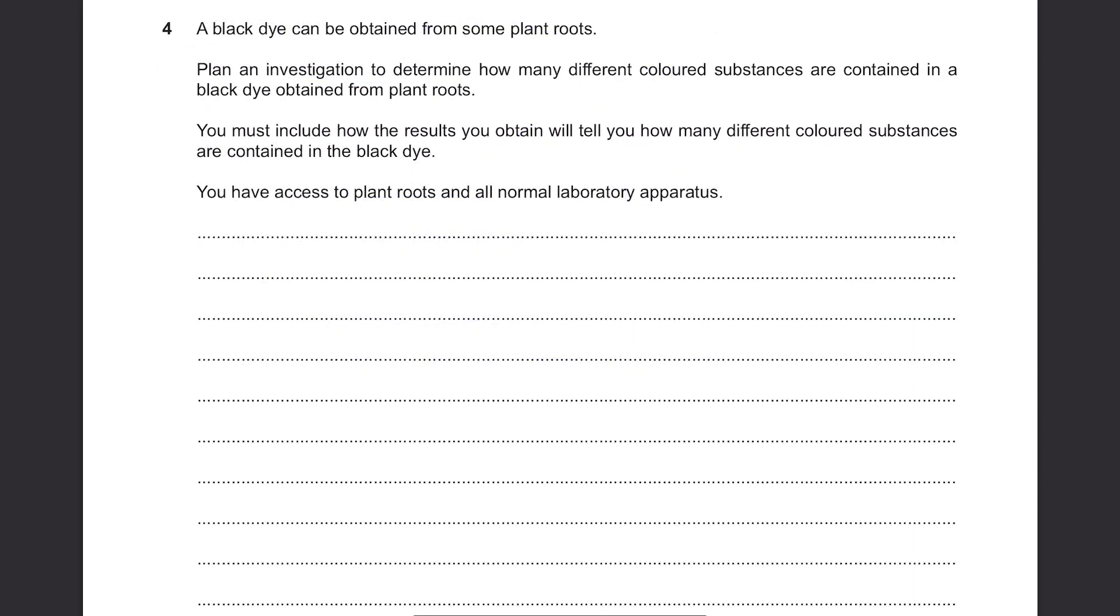Question 4. A black dye can be obtained from some plant roots. Plan an investigation to determine how many different coloured substances are contained in a black dye obtained from plant roots. If you see this, how many different coloured substances and a dye, it means that you need to carry out chromatography. You must include how the results you obtain will tell you how many different coloured substances are contained in the black dye, you have access to plant roots, and all normal laboratory apparatus.